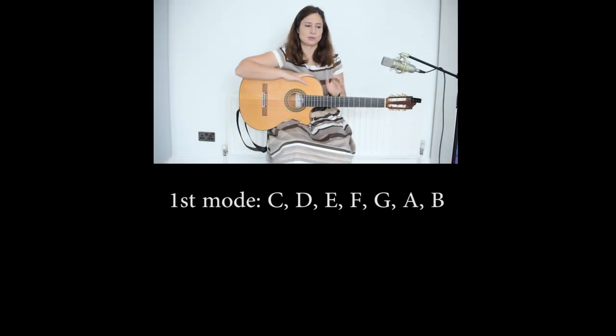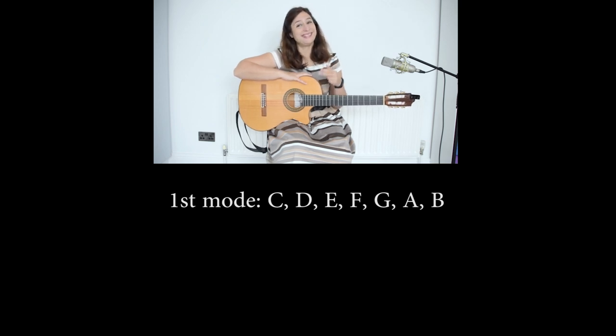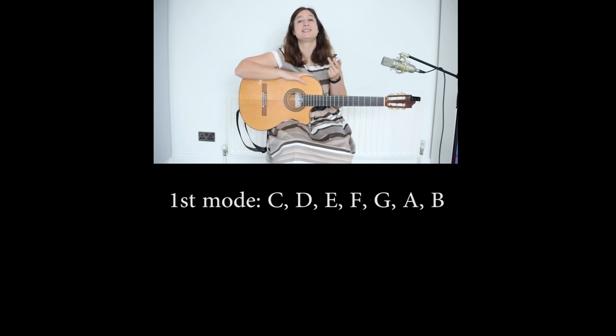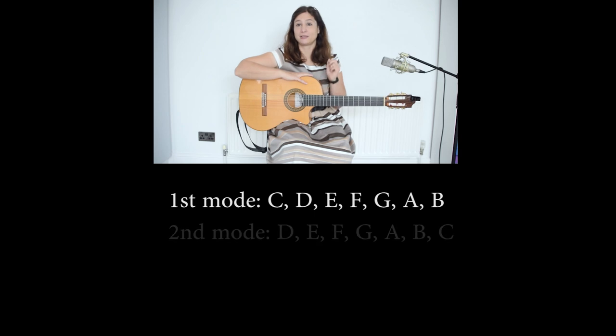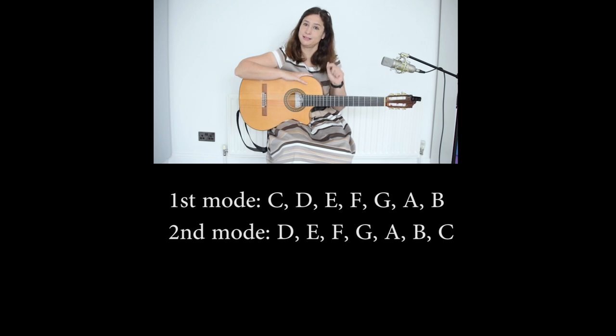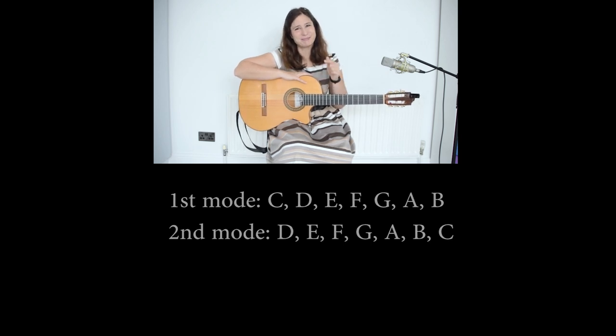What are the modes? The modes are starting positions within the scale. If we look at the C major scale, the first mode will be C, D, E, F, G, A, B, C, and the second mode will start on the D but it will be exactly the same notes — so it will be D, E, F, G, A, B, C.